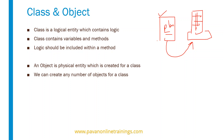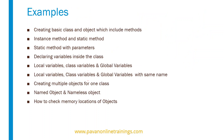A class is a collection of methods and variables. If you want to access those variables and methods, we have to create an object for that particular class. Now let us see different ways of creating classes, how we can specify the variables, how we can define the methods within the class, and how we can access them.